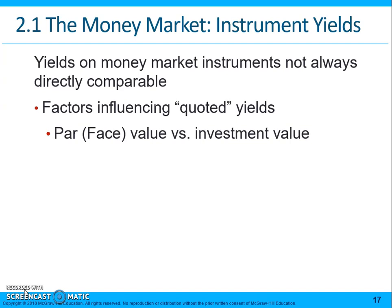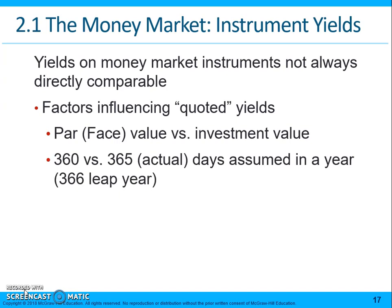Those factors include the par or face value of the instrument versus the investment value. T-bills are issued with a face value at a discount; others accrue interest. They also use either a 360-day or a 365-day basis — or actual basis, which would be 366 in a leap year.